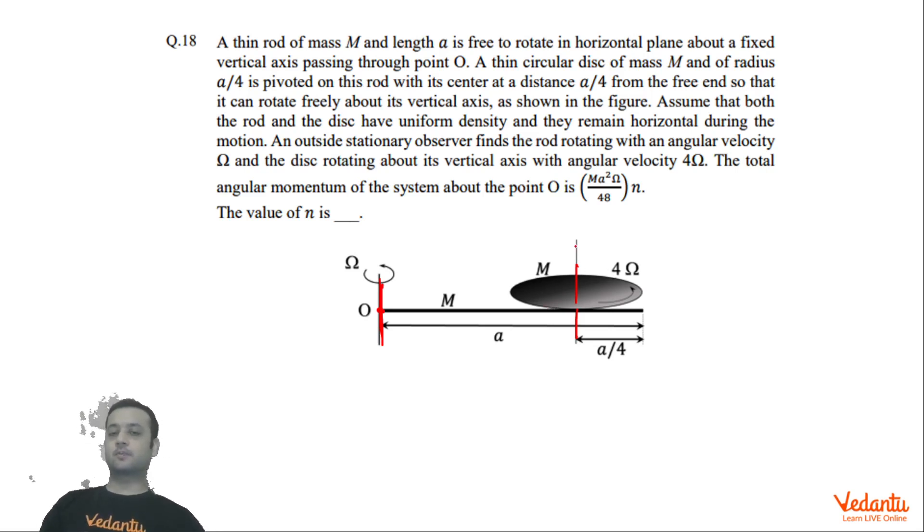Now those students who thought of this as a rigid body would have written simply Iω and would have gotten this question wrong. But this disc is not rigidly attached to the rod. In fact, this disc is rotating at 4Ω about this axis.